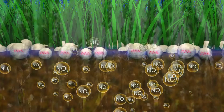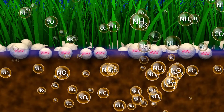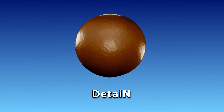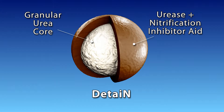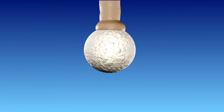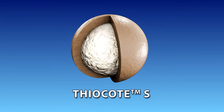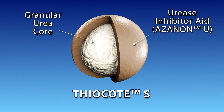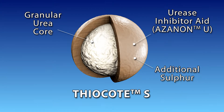To slow down the urease and nitrification processes of urea, Kimli has developed Detain, a unique urease nitrification inhibitor aid that improves overall crop performance. For better crop yields, Kimli has also developed Thiocoat-S, which consists of a urease inhibitor aid called Azenon-U, plus additional sulfur for enhanced crop nutrition.